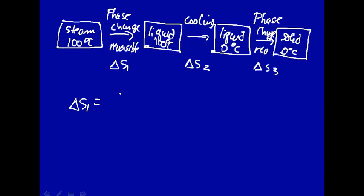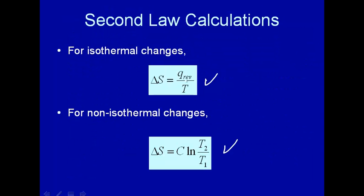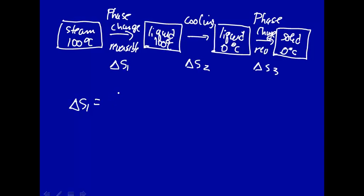Let's take delta S1. Because it's a reversible phase change at constant temperature, we go back to the isothermal equation: delta S equals Q reversible over T. For Q reversible — we have steam being converted into a liquid, so the sign of Q should be negative. To go from liquid to vapor you put in heat; going the other way you release heat. That's why steam actually burns even though the temperature doesn't change — as you go from steam to liquid, heat is released into your skin.